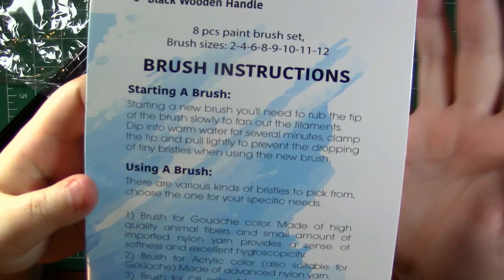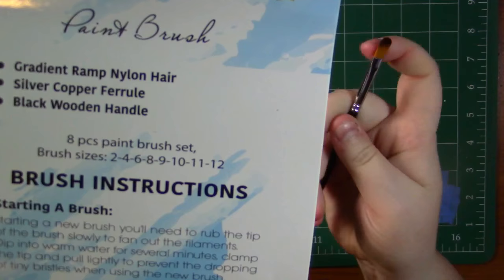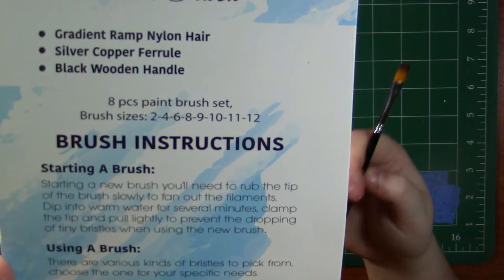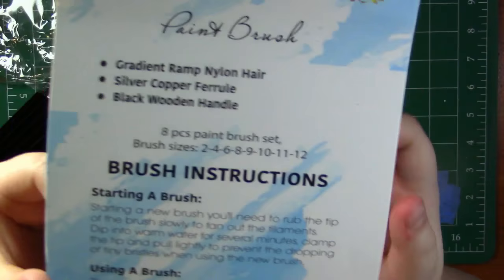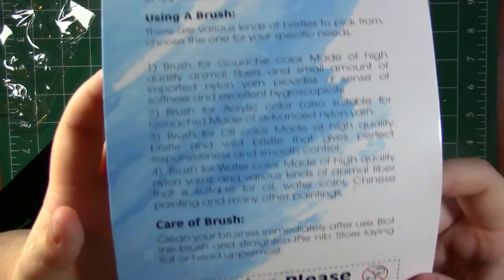Then they also tell you how to get your brush started because all of these brushes come with sizing on them. So basically what you're going to do is you're going to kind of run your finger through it like this, try to get the sizing broken up. Then you're going to soak this for a few minutes in some water and then you're going to kind of pull at the bristles so you can get any loose hairs that are going to come out so they don't drop out in your painting. And then they tell you there are different kinds of bristles to pick from. And then to take care of your brush you just want to store them either upright or flat, don't store them downwards.